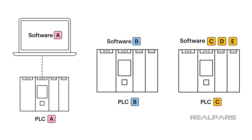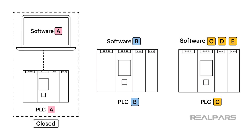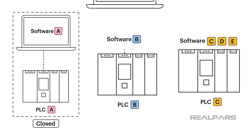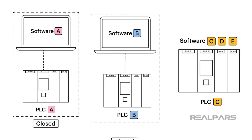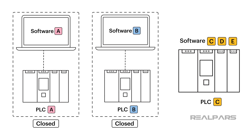Because I can only use Software A for programming PLC A, I call this a Closed PLC. The same goes for PLC B — this PLC can be programmed only with Software B, so this one is also a Closed PLC.